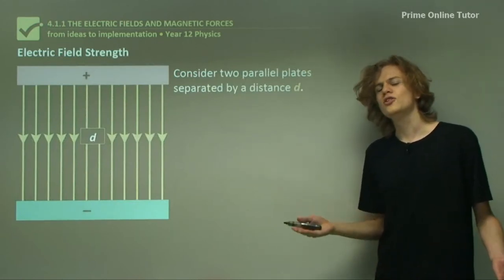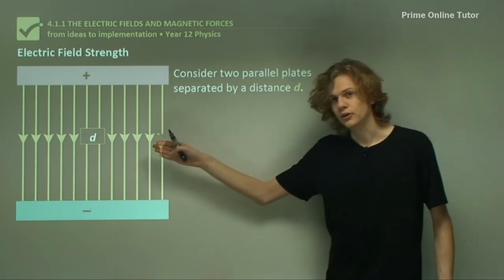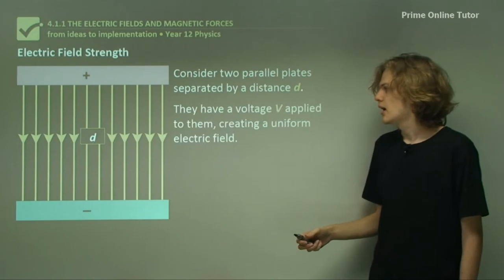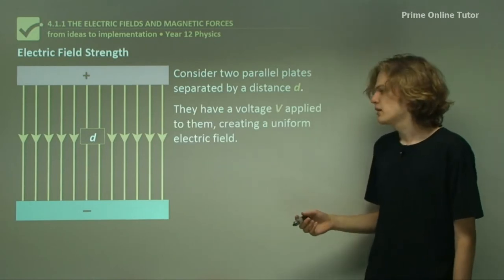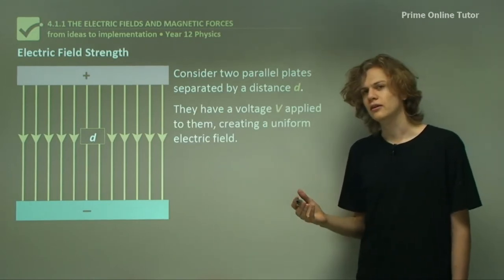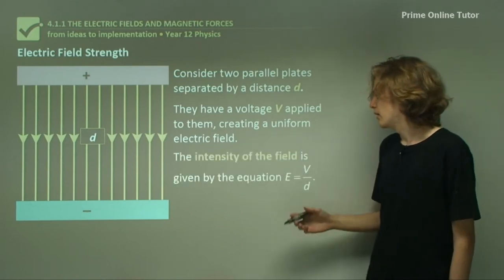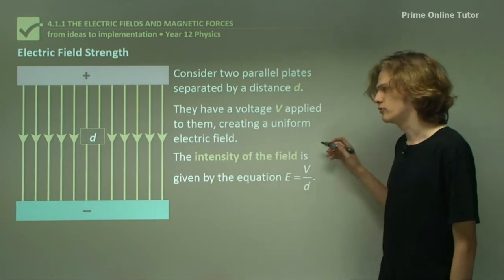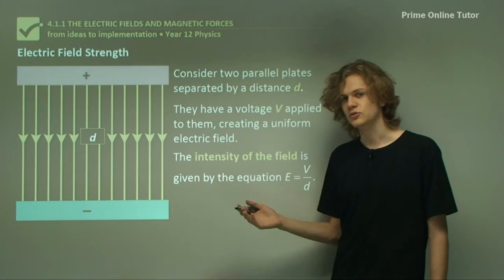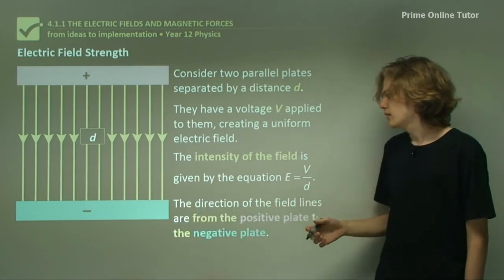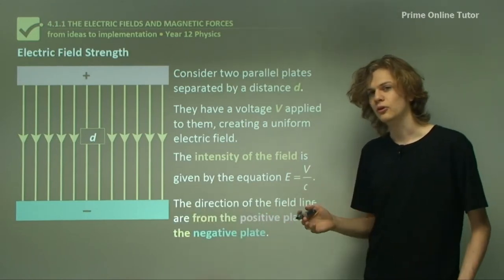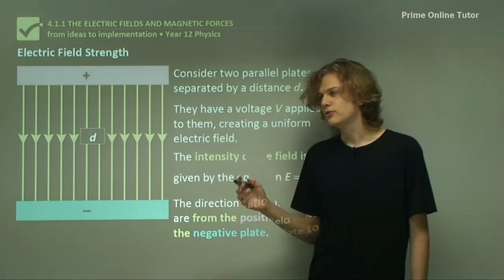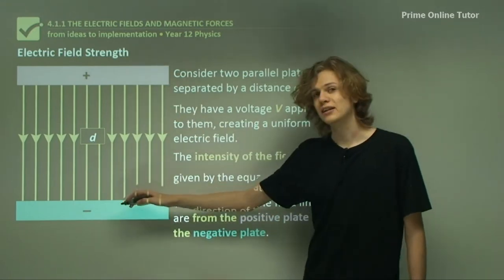How do we measure the strength of an electric field? We have two parallel plates separated by a distance D, and we've charged them with a voltage V. We can calculate the strength of the electric field using this equation: E equals V on D, where V is the voltage between the two plates, and D is the distance between them. Also important in measuring an electric field is the direction, because of course it is a vector. And as before, the electric field lines always move from the positive plate to the negative plate.